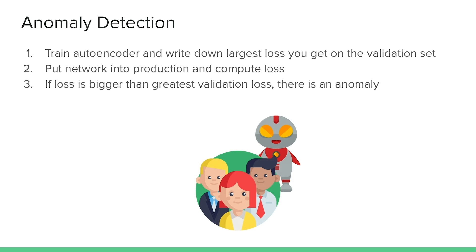We can almost identically reuse this for anomaly detection. We train our autoencoder in the standard way and note the largest loss observed on our validation set — say, a loss between one and five. Then we put that trained network into production: it will take any input sample and produce a certain loss. If that loss in production is much greater than the largest validation loss we saw during training, there is an anomaly — the sample is clearly out of the distribution the network was trained on.